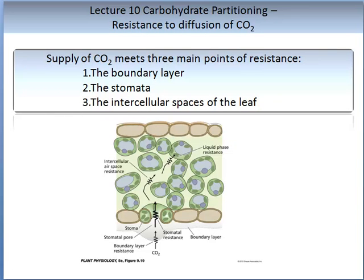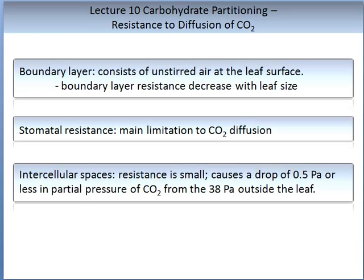There are three main points of resistance to the supply of CO2. The first is the boundary layer, the second is the stomata, and the third is the intracellular spaces in the leaf. The boundary layer results in unstirred air around the leaf surface, known as boundary layer resistance, and it decreases with leaf size. Stomatal resistance is the main limitation of CO2 diffusion, while the resistance incurred in the intracellular spaces is small.